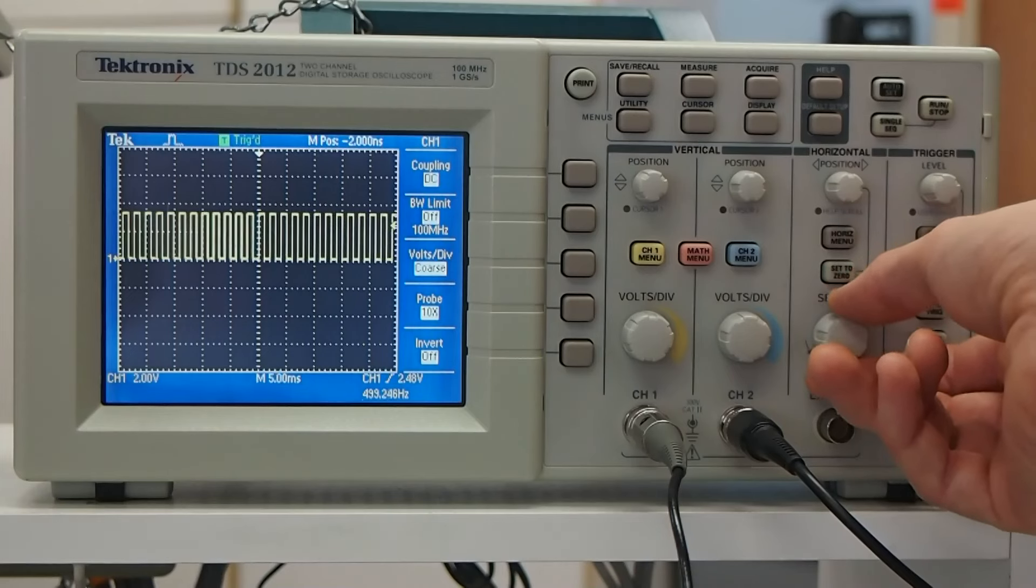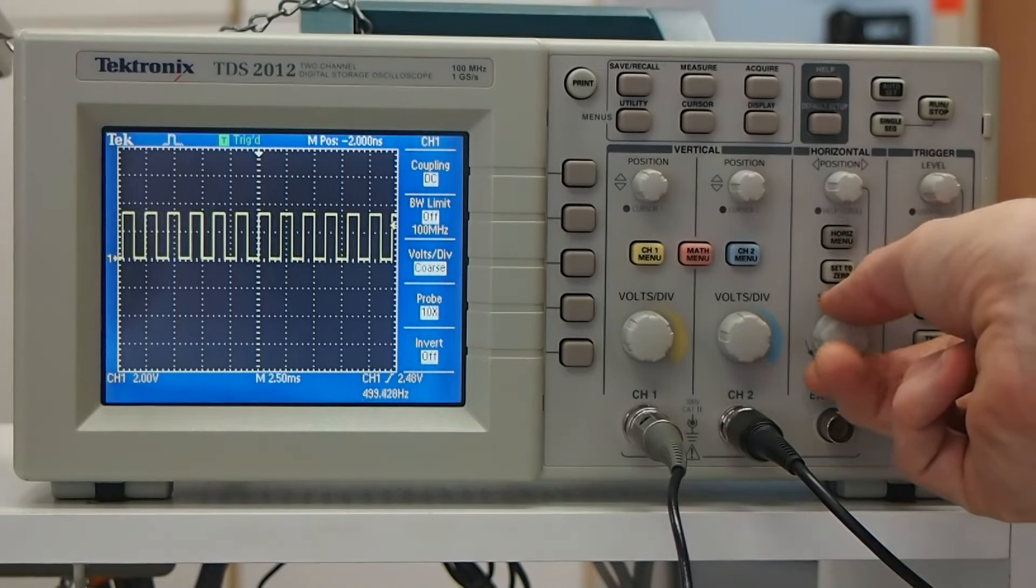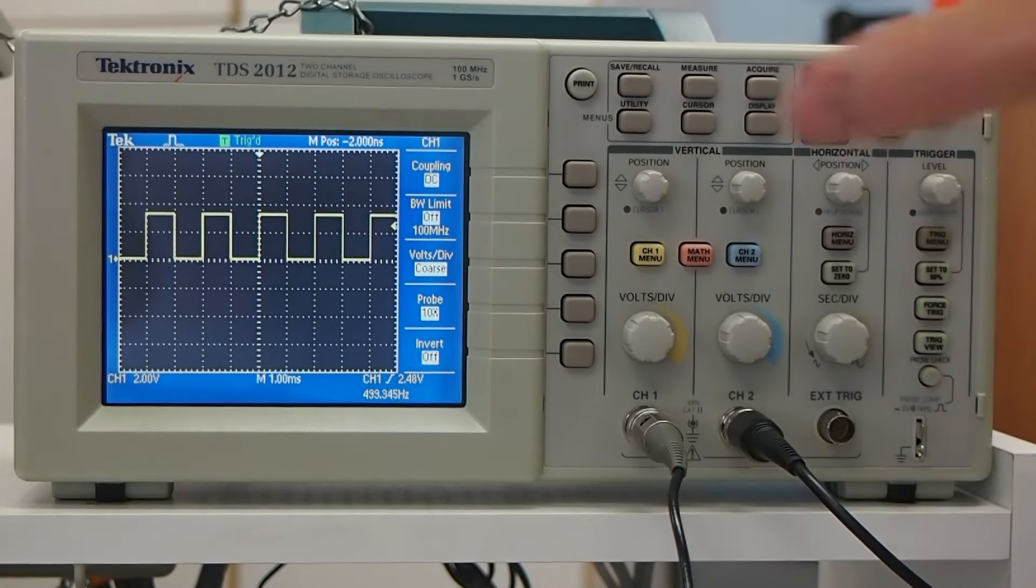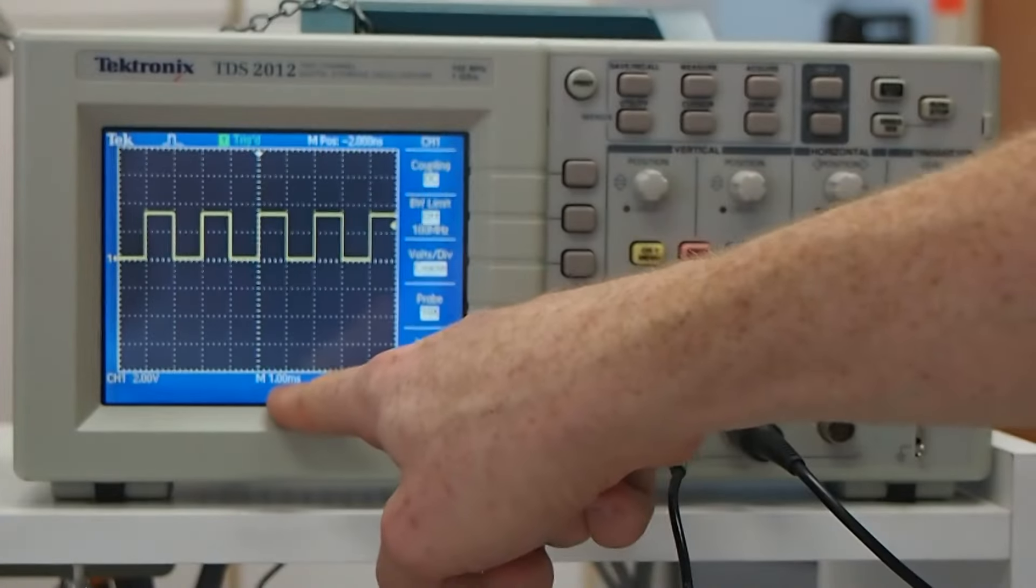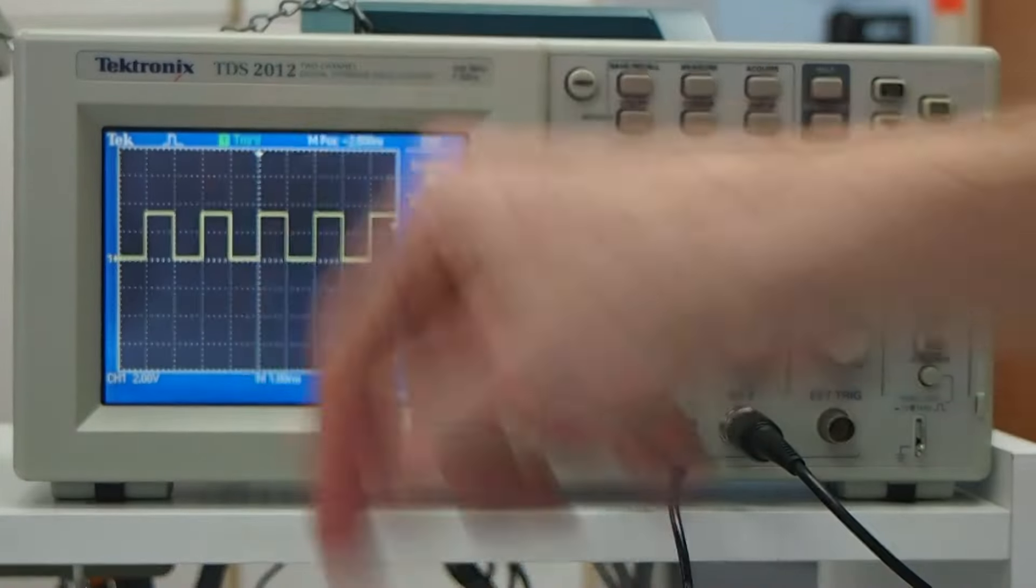Now we're starting to see something that isn't just a blur. Here. And let's keep going. Okay, here we are. Now we've got a stable signal, and it says one millisecond per box, again, two volts per division on the y-axis.